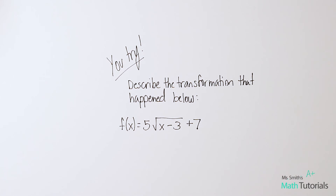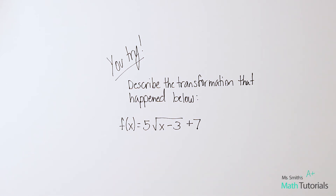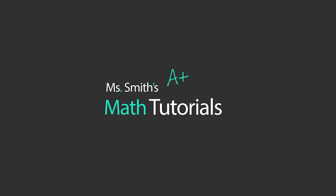Now you try this one: describe the transformation that occurred. Remember this is a radical function — the parent function was f(x) = the square root of x. Give a written description of what has happened. I'll post the answer in the video description below. This has been Ms. Smith's Math Tutorials.